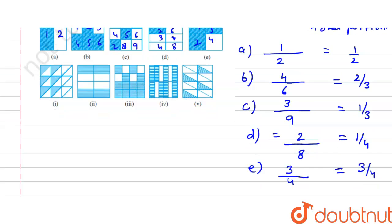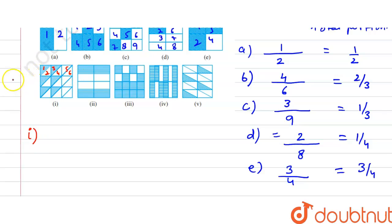Now for the second set of figures: in the first figure, there are 6 columns in the first row, and there are 3 rows, so 6 multiplied by 3 equals 18. Total count is 18 and the shaded ones are 1, 2, 3, 4, 5, 6 — so shaded is 6, giving us 6/18.